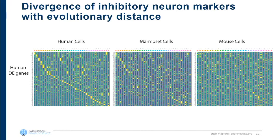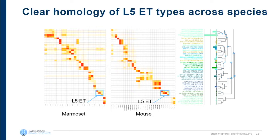This heatmap gives a snapshot of how evolution has changed inhibitory cell types. The cross-species consensus clusters are along the top. Differentially expressed genes were determined based on human pairwise comparisons, then those same genes are shown for marmoset and mouse cells. As evolutionary time progresses you start to lose the distinctness of those differentially expressed genes: in marmoset you can still see the diagonal line of highly expressed genes, while in mouse it fades out — suggesting mouse might have isoform differences or different pathways to instill the same cellular function.